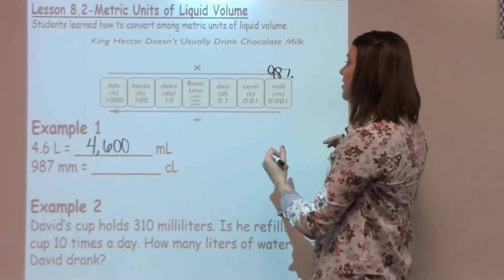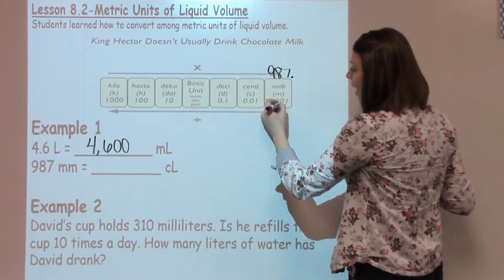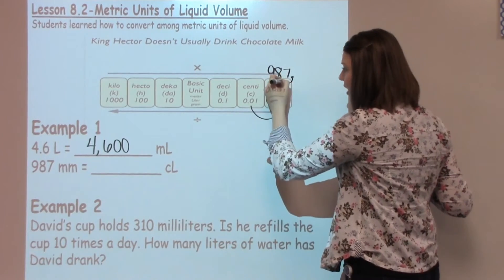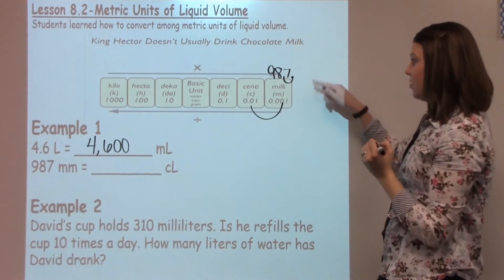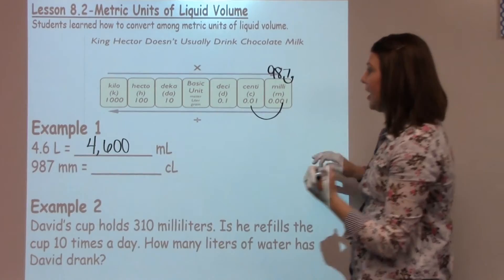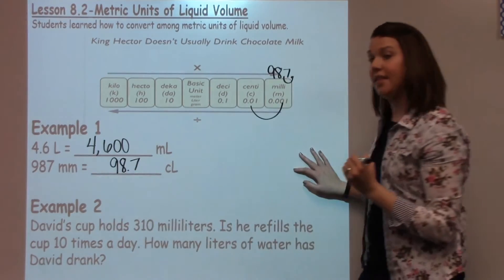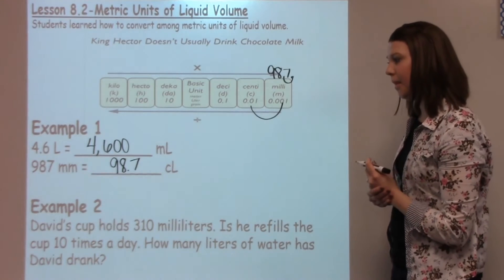So when we go ahead and shift this to our centiliters, we're going to work our way back one, one spot. I'm going to move this decimal into my number one, which is one spot, which is going to make it 98 and 7 tenths centiliters. All right.